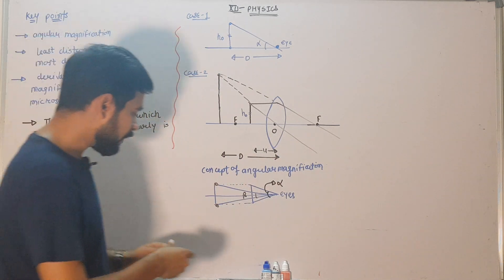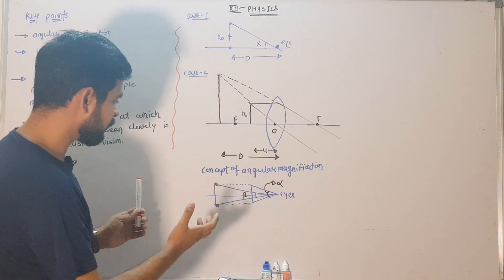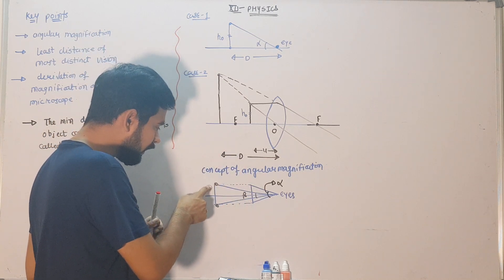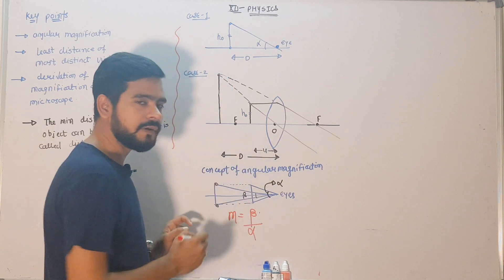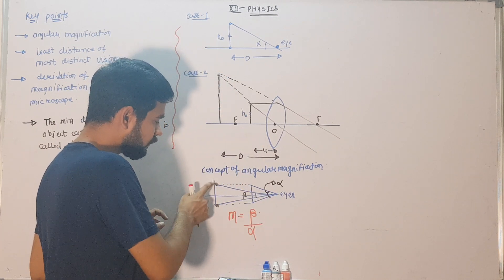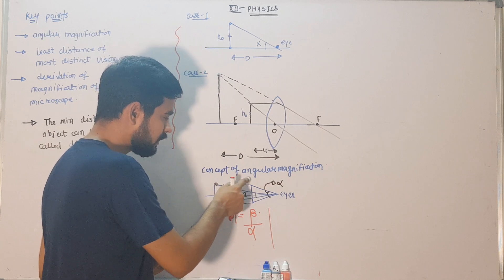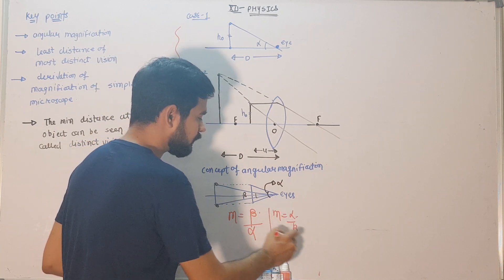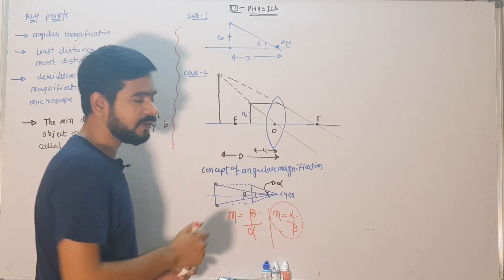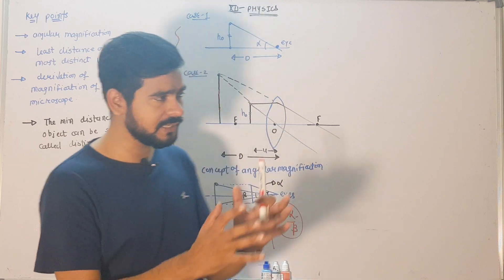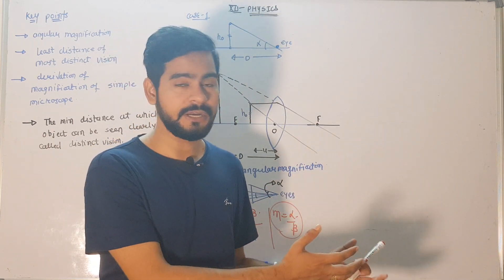So the formula of angular magnification: simple magnification is Hi upon Ho — image height to object height — but in this case, if you wish to find the magnification when the object is at position one, it is M equals beta upon alpha, and for the other position M equals alpha upon beta. This is angular magnification: the object size is the same, but changing position changes the angle, so it appears different. It is not linear magnification.